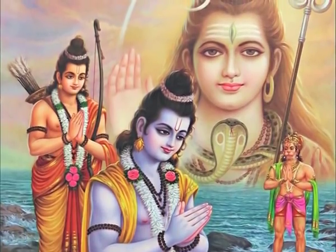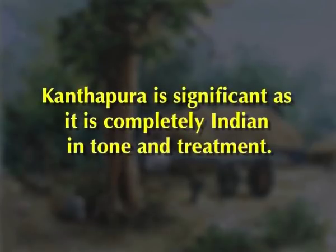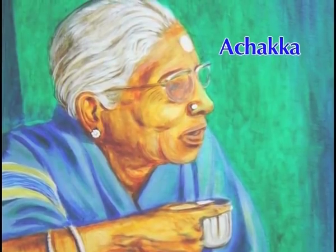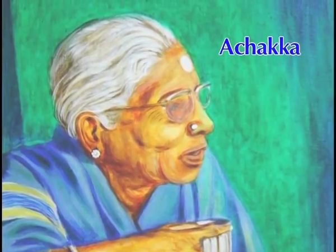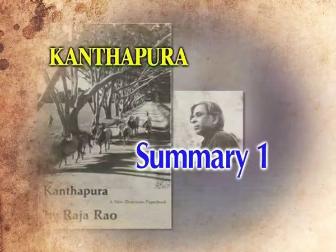The religious strand of the novel is also important. Mythical characters such as Rama, Shiva, and others are invoked in this freedom struggle. The novel is significant as it is completely Indian in tone and treatment. The narrator, the old woman Achaka, is the typical Indian grandmother — digressing and judgmental. The text of Kanthapura does not just have words directly translated from the local language Kannada, but also literal translations of phrases and proverbs from the vernacular. The novel was thus instrumental in creating an Indian English language.